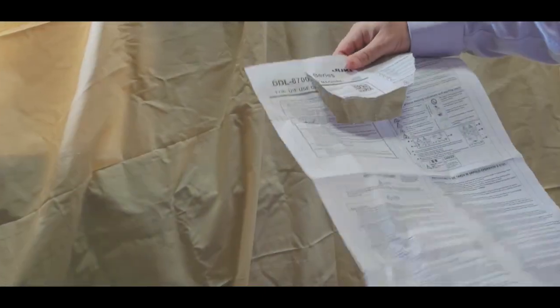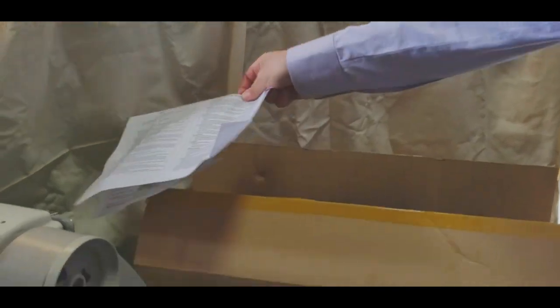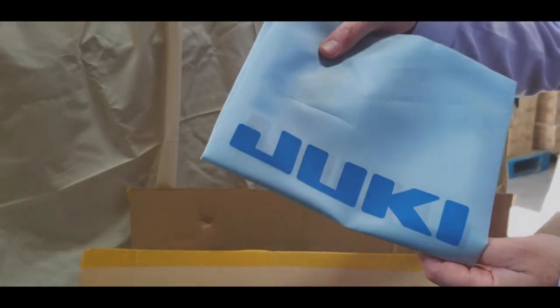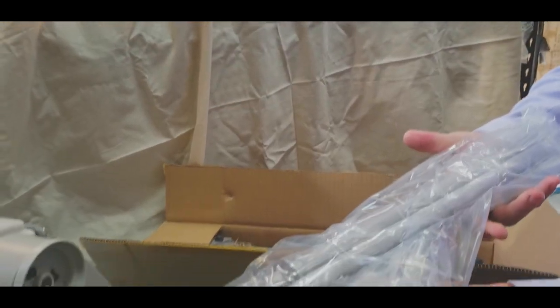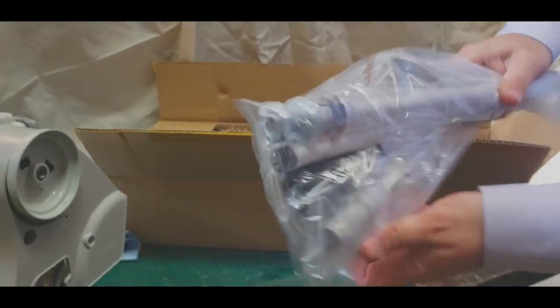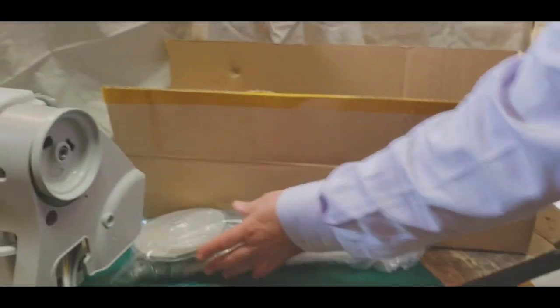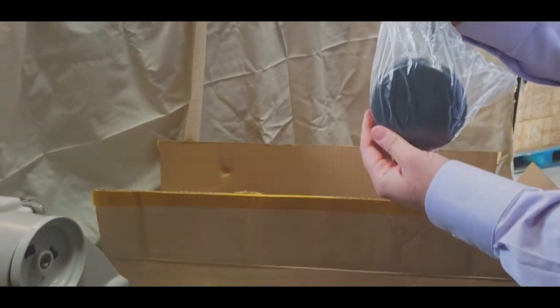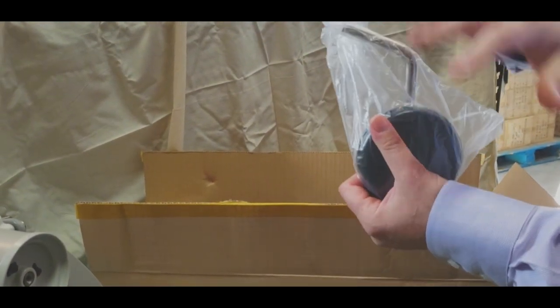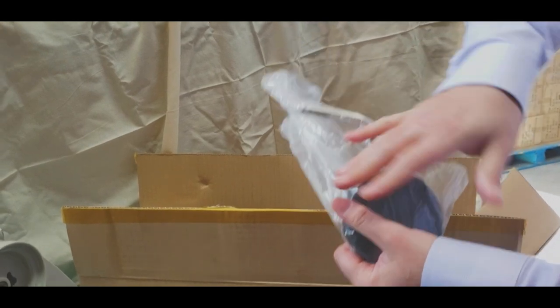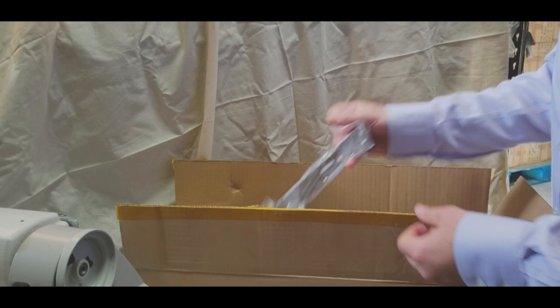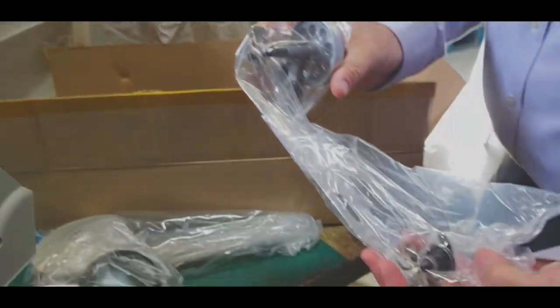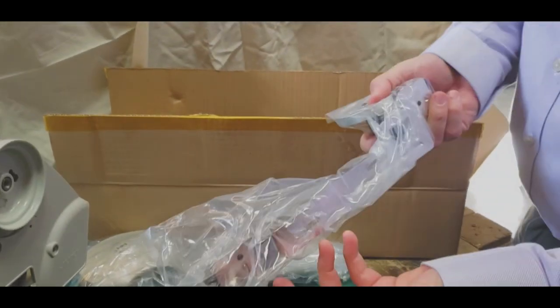This is the owner's manual, or how to put stuff together, a lot of information, paper. Dust cover for the machine. This is the thread stand, two-spool thread stand. Knee lifter, manual knee lifter, but you won't need this. You don't even have to put this on because the machine is automatic. This is the bobbin winder for the machine that goes on the side. I'll show you, it's cleaner.